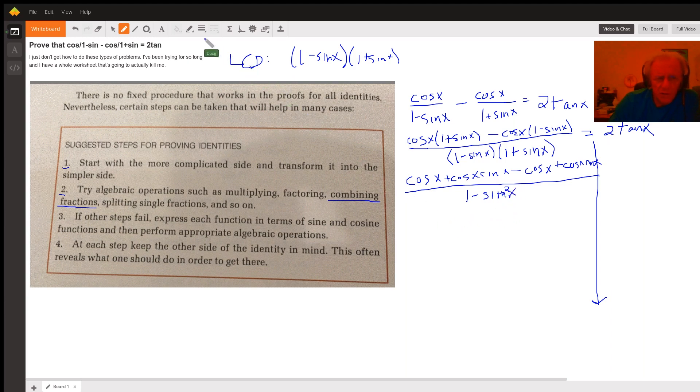And in the new numerator, we can see that the cosine of X and the opposite of the cosine X cancel out. And we've got two of these cosine X sine X terms. So in the numerator, we've got two sine X cosine X.